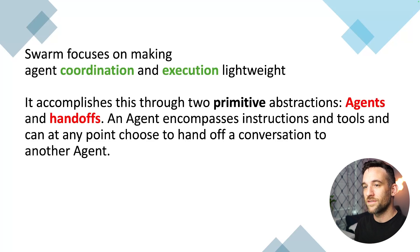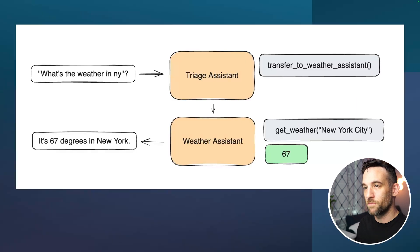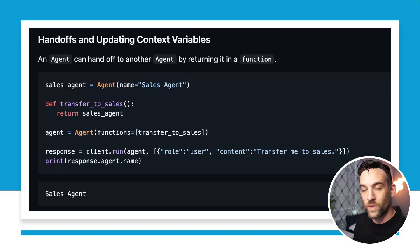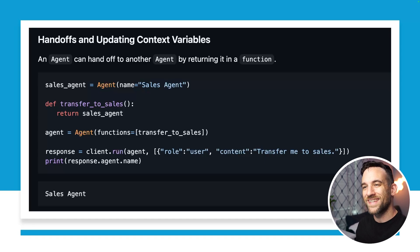An agent encompasses instructions and tools and can at any point choose to hand off the conversation to another agent. For example, if we ask 'What's the weather in New York?', there's a triage assistant that will use the function 'transfer to weather assistant', hand this off to the weather assistant, which calls the tool 'get weather in New York City', then returns the output: 67 degrees in New York. A quick code example: we have a sales agent — we just instantiate an agent class, give it the name 'sales agent', and then have a function that returns that sales agent.